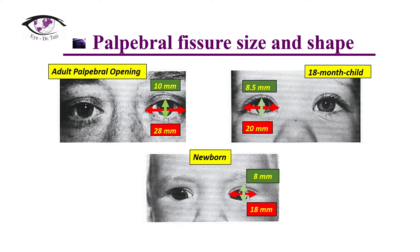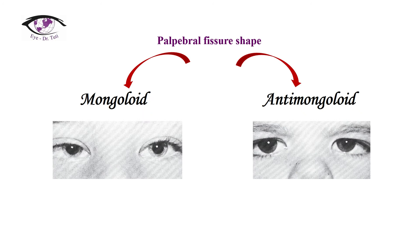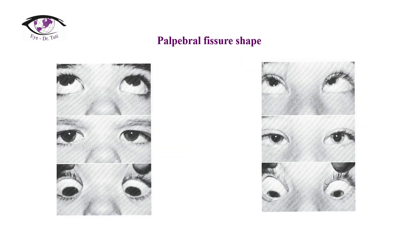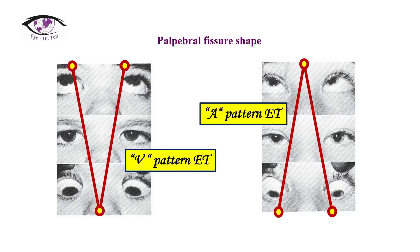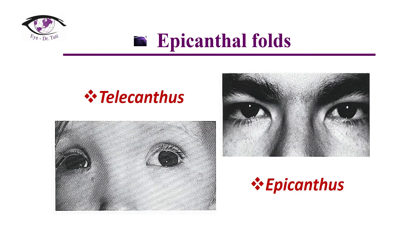There are two main palpebral fissure shapes: mongoloid and antimongoloid, depending on the relative positions of the medial and lateral canthi. If the outer cantus is higher than the inner cantus, we talk about antimongoloid palpebral slant, and if the outer cantus is lower than the inner cantus, we talk about mongoloid palpebral slant. This is important because it might create V-pattern esotropia or A-pattern esotropia. V-pattern esotropia is characteristic for a patient with antimongoloid palpebral fissure, and A-pattern esotropia is characteristic for a patient with mongoloid palpebral fissures.